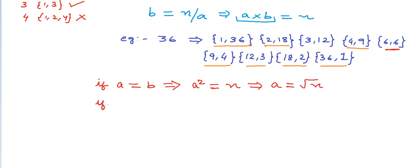What if a is not equal to b? So if a is less than b, then if we see carefully, then a should always be less than square root of n and b should be greater than square root of n. Similarly, if b is less than a, then b should be less than square root of n and a should be greater than square root of n. So if a and b are not equal, one of them has to be less than square root of n and another one has to be greater than square root of n.